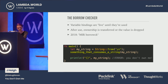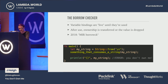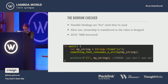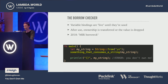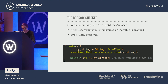Here are the rules for ownership: each value in Rust has a logical owner; there can only be one owner at a time; and when the owner goes out of scope, the value will be dropped. The way those rules are enforced is by the borrow checker — a static analysis tool that figures out if borrows are valid. Variable bindings are live until they're used, and after use, either ownership is transferred or the value is dropped.